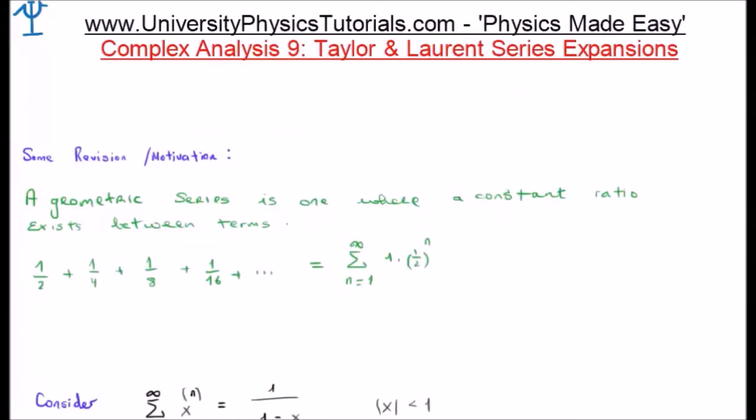I'd like to do some revision or motivation. A geometric series is one where a constant ratio exists between all the terms. Consider for example, one half plus one quarter plus one eighth plus one sixteenth and so on. It can be shown that this is in fact the series from n equals one to infinity of one half to the n.